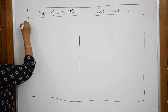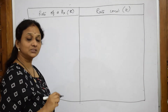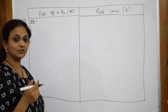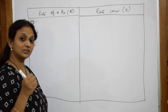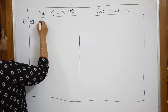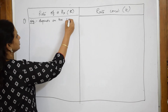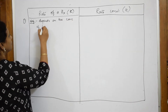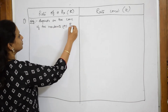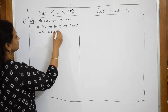Now, what is the first difference? Let us write the definition first. Rate of reaction — it represents the dependency of rate of reaction on the concentration of the reactants or products with respect to time. So, rate of reaction depends on the concentration of the reactants or products with respect to time.